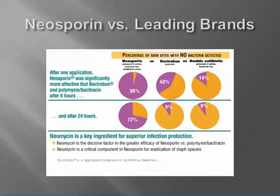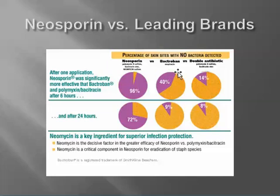Neosporin compared to leading brands of antibiotic ointments: by this graph, it seems to cut down on the amount of bacteria present in wounds. Neosporin has 96% of the skin area that's wounded free of bacteria, compared to 40% for Bactroban. A generic antibiotic might only have 14% of skin with no bacteria detected. And here are the figures after 24 hours.